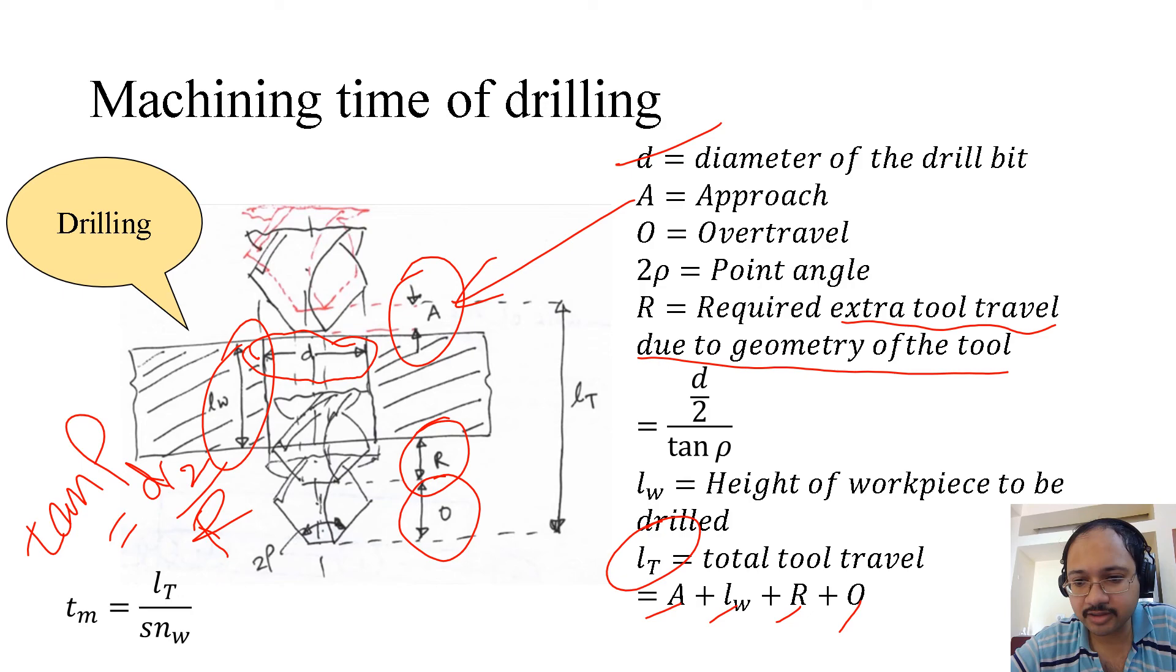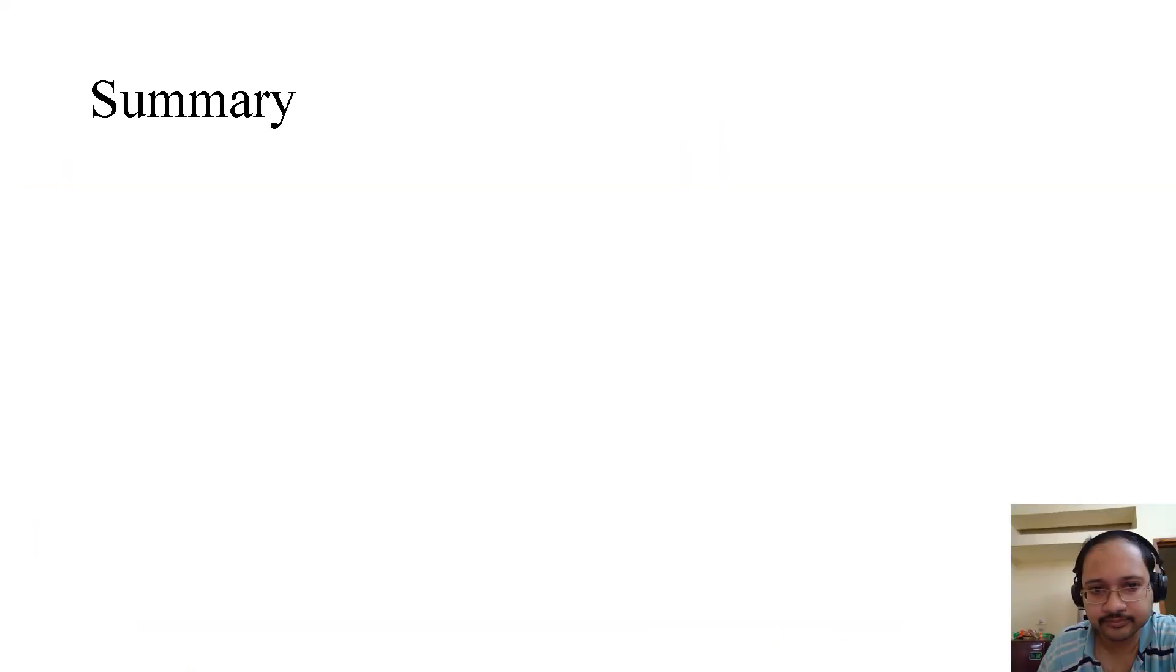The total tool travel is Lt equals to A plus Lw plus R plus O. Obviously, this total tool travel needs to be divided by the feed velocity, which is in this case S, the feed of the drill bit times the rotation of the drill bit.